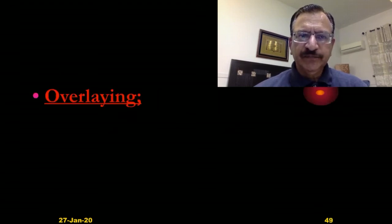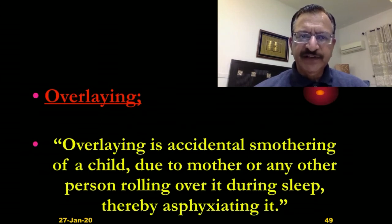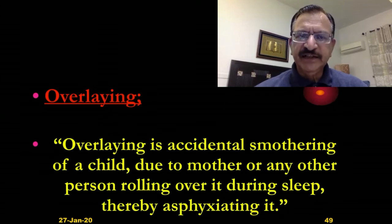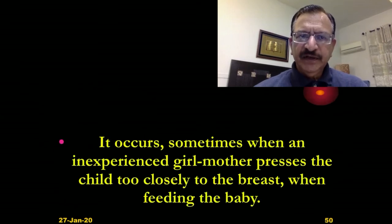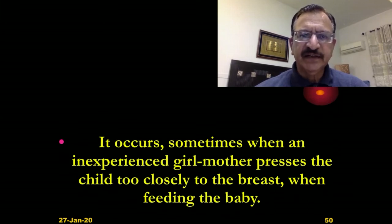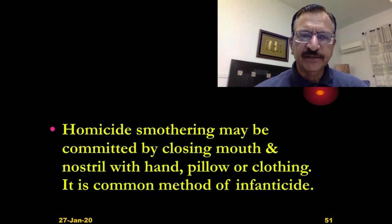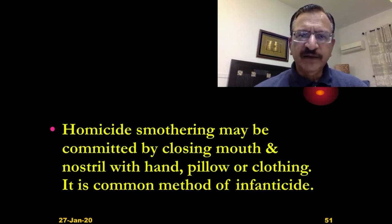Then overlaying — overlaying is accidental smothering of a child due to a mother or any other person rolling over it during sleep and thereby asphyxiating the child. It occurs sometimes when an inexperienced young mother presses the child too closely to the breast while feeding and may smother her own child because of inexperience. Homicidal smothering may be committed by closing the mouth and nostril with a hand, pillow, or clothing. It is a common method of infanticide.